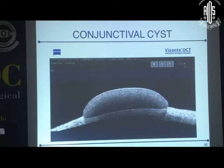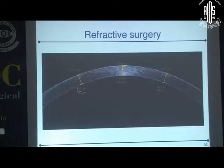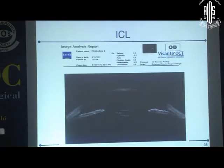Conjunctival cysts — it is important to assess whether it is communicating with the inside of the eye or not. In this case, you can see there is no gap in the sclera, confirming it is a simple conjunctival cyst. Refractive surgery will be covered next. One important application is documenting post-ICL cases — whether the vaulting is proper and whether the ICL is rubbing the under-surface of the iris. It is a very useful method for diagnosis.